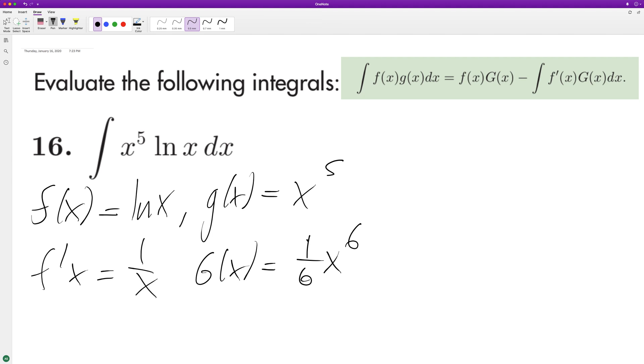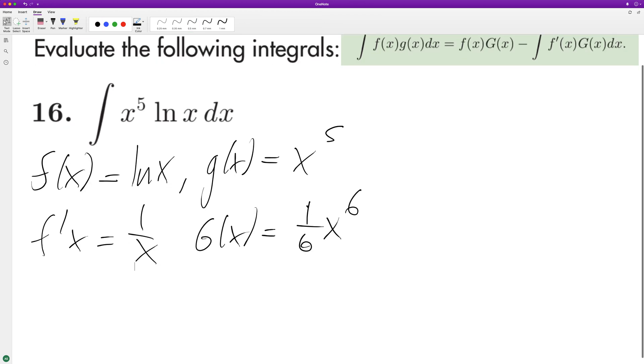Alright, plug-and-play time. So f of x times integral G of x, so times 1/6 x raised to the 6, minus the integral of f prime of x, so 1 over x times 1/6 x raised to the sixth. We can just reduce this down to x raised to the fifth.